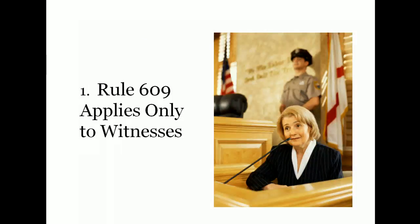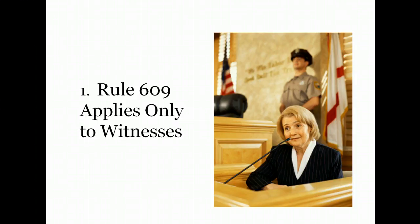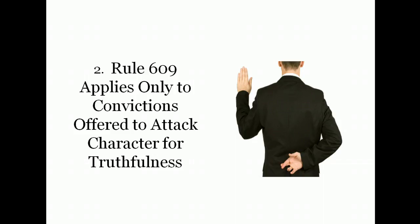Rule 609 is a very complicated and difficult rule, so it's helpful to keep a couple of key principles in mind. First, Rule 609 applies only to witnesses. This is an impeachment rule, and it is therefore only available against witnesses. You can only be using a prior conviction under Rule 609 if you have a witness who's testifying and is subject to impeachment. Second, Rule 609 only applies when the conviction is offered to attack the character for truthfulness. This is an impeachment rule, and the evidence's only legitimate purpose under Rule 609 is to attack character for truthfulness.